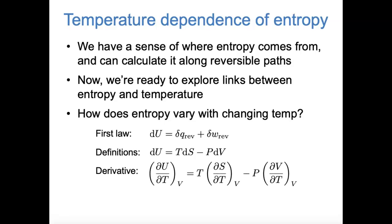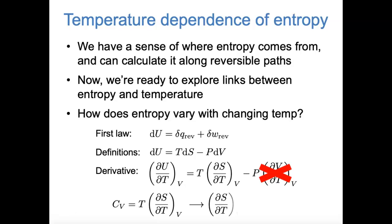Now we can take all terms in this equation and take partial derivatives with respect to temperature at constant volume. If both sides of the equation were the same before, we can take these derivatives and both sides are still equal. The last term goes away because the partial derivative of volume with respect to temperature at constant volume is zero. That leaves us with two terms, and the left side is our definition of constant volume heat capacity. So Cv equals T times the partial derivative of entropy with respect to temperature at constant volume. Rearranging, that partial derivative equals Cv over T.